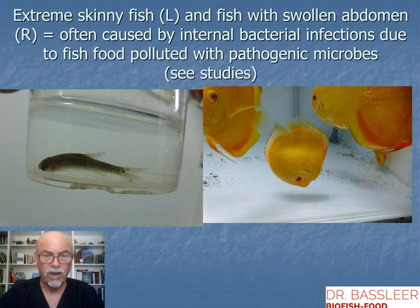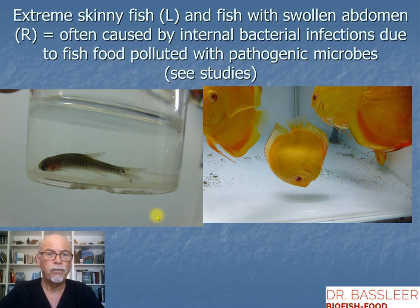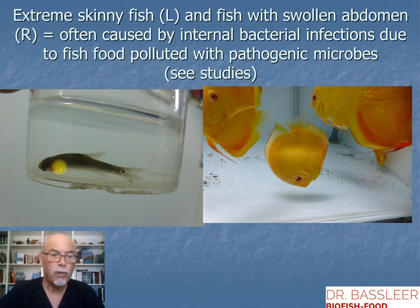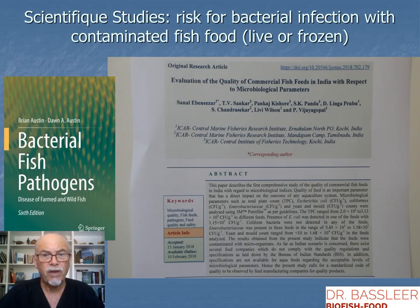Also, extremely skinny fish and fish with a swollen abdomen — here on the right, the discus — are often caused by internal bacterial infections due to food that is polluted with pathogenic microbes. It might look like the fish has worms or parasites, but it's usually a lot of bacteria internally in that little fish.